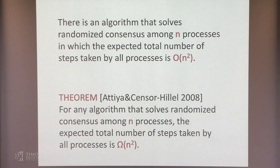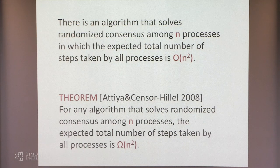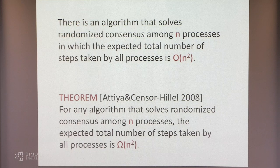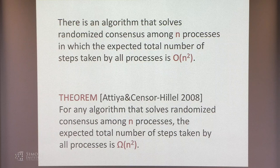There is an algorithm that solves randomized consensus among N processes in which the expected total number of steps taken by all processes is O(N²). This is the total step complexity. About ten years ago, Attiya, Censor-Hillel and Paz proved that any algorithm that solves randomized consensus among N processes uses Omega(N²) expected total step complexity, proving this is tight. The proof uses a valency argument, but a much more complicated one involving probabilistic valencies.